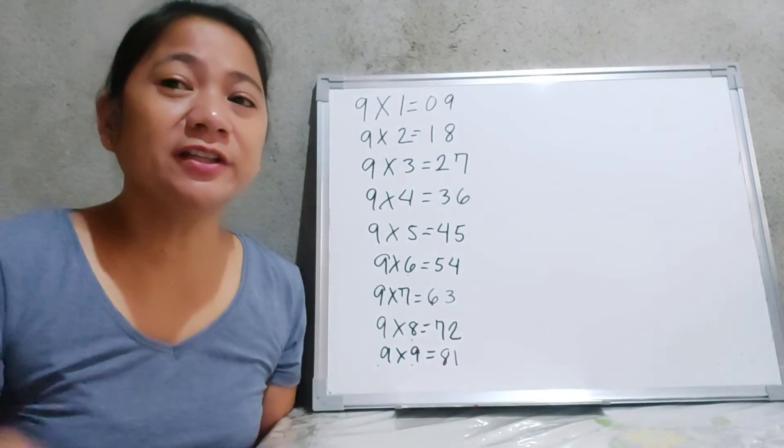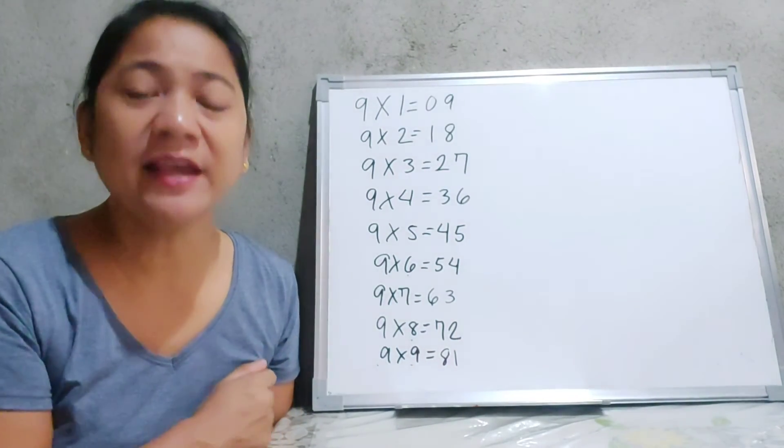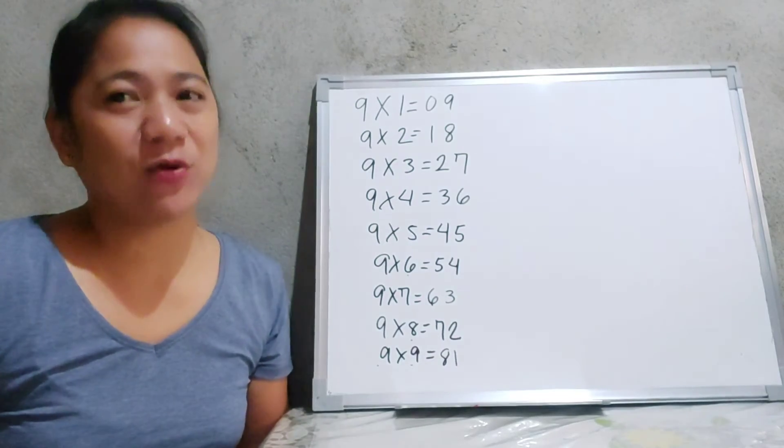So those are the two tricks in answering the multiplication table by 9. If you have a question in mind that why teachers don't teach us the easiest or the shortcut ways in answering the multiplication table, it is because they are preparing and molding us to master the concept of every lesson that they present to us. So that if we encounter that the multiplication table was presented to us in a different way, it is easy for us to understand. So it is important to learn and master the concept of each lesson.